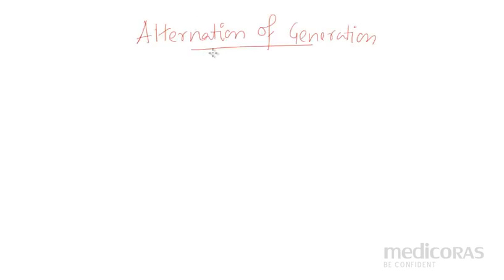Welcome to MediCoRals. Hope you all are doing good. Today's topic is Alternation of Generation. This is one of the most requested videos. The first video is Reproduction in Flowering Plants Part 1. A lot of messages and emails were received on this topic, so I will make this video. It will be easy to understand what is Alternation of Generation. We will break down the whole term so that it will be easy to understand.